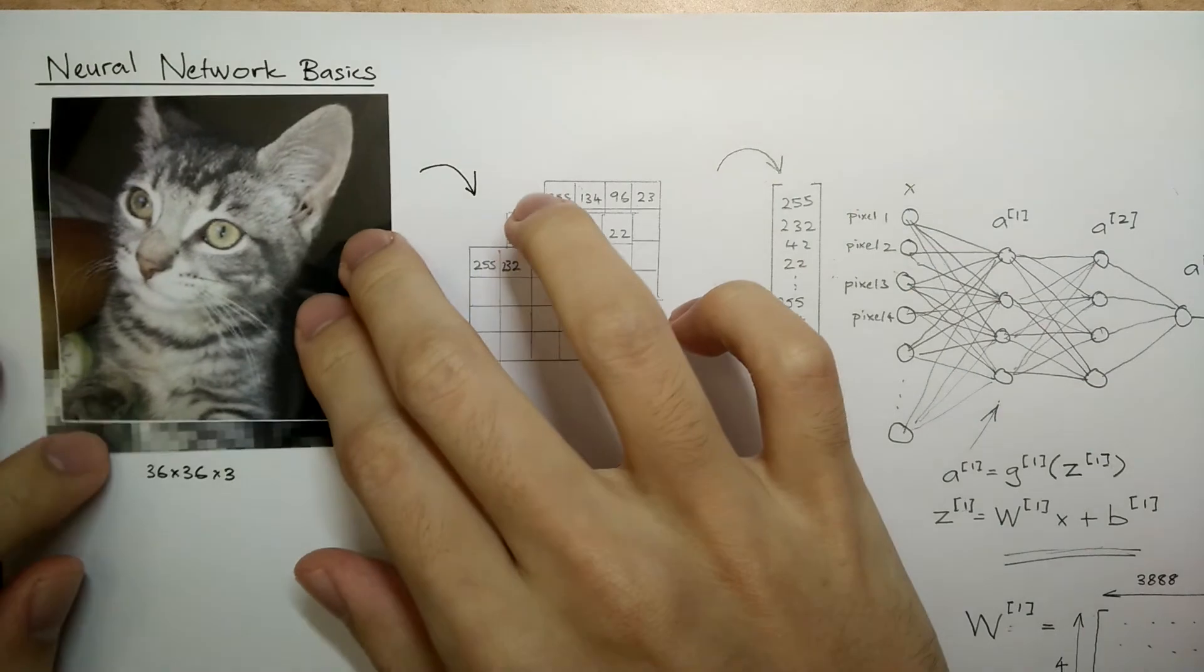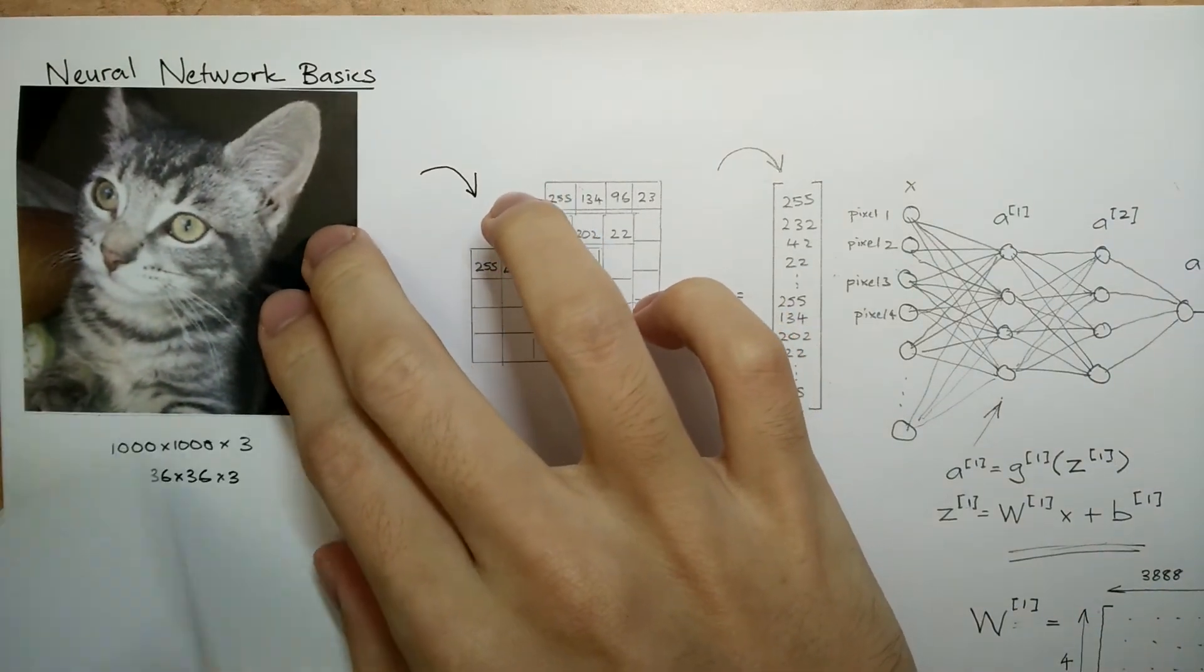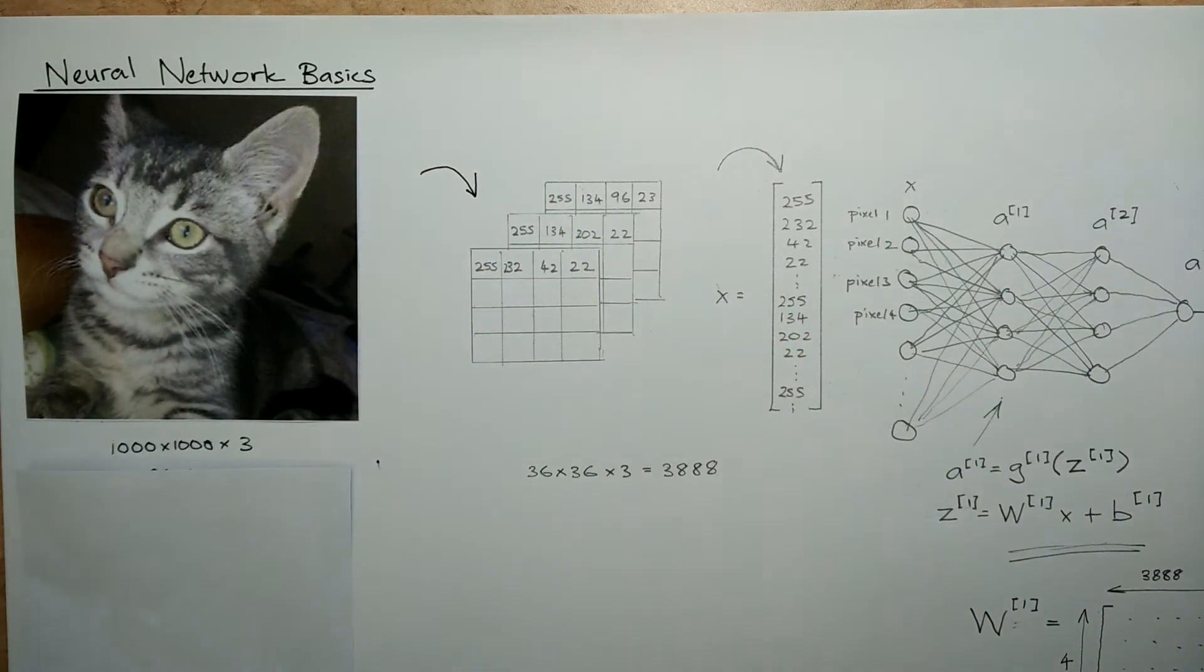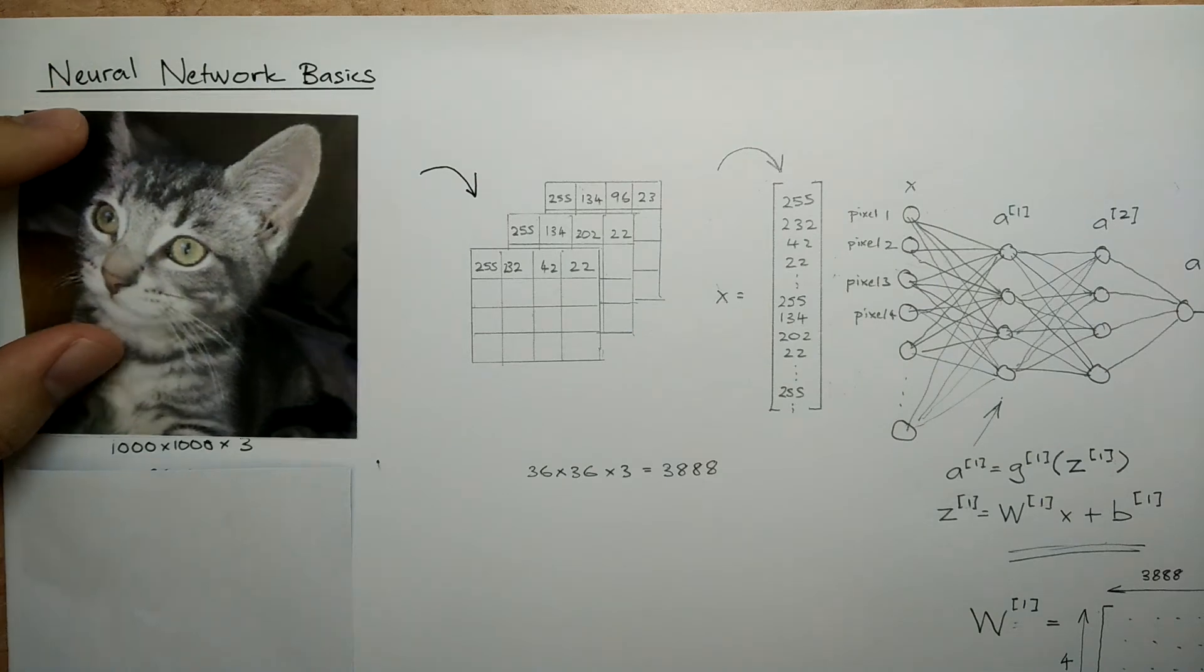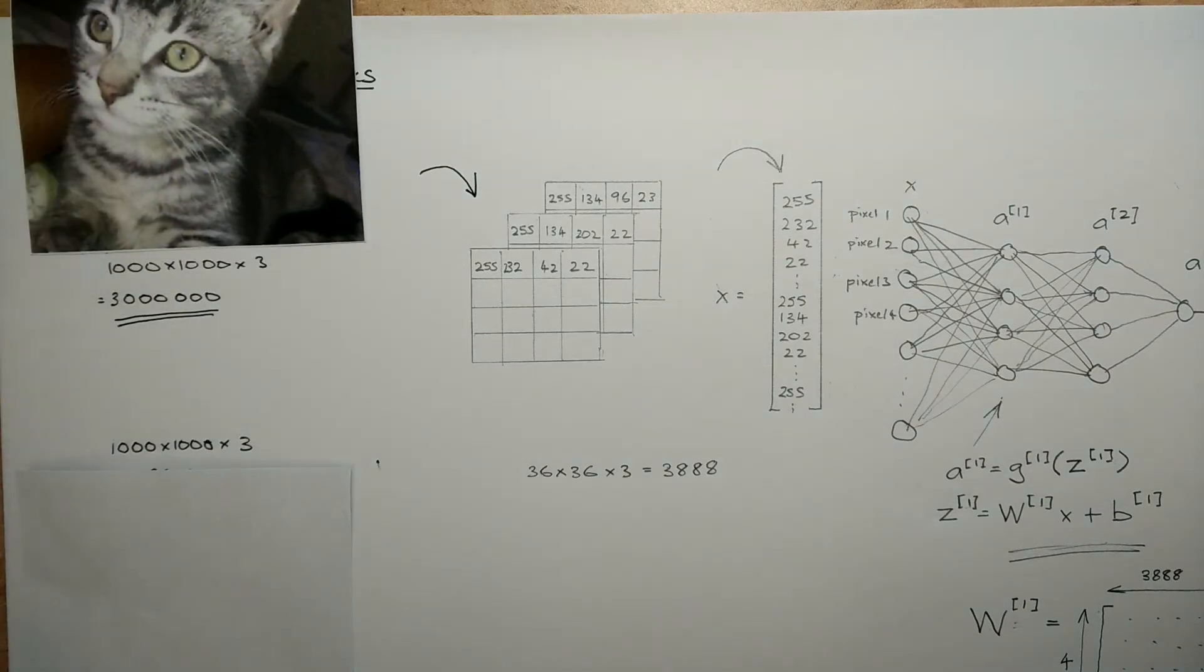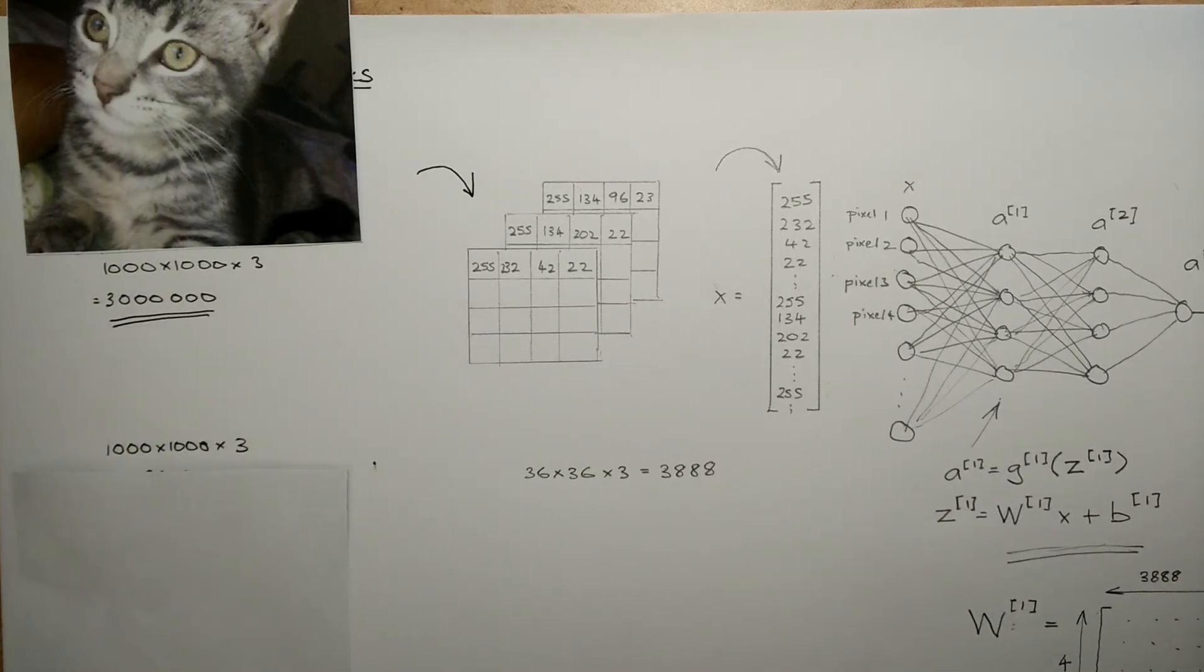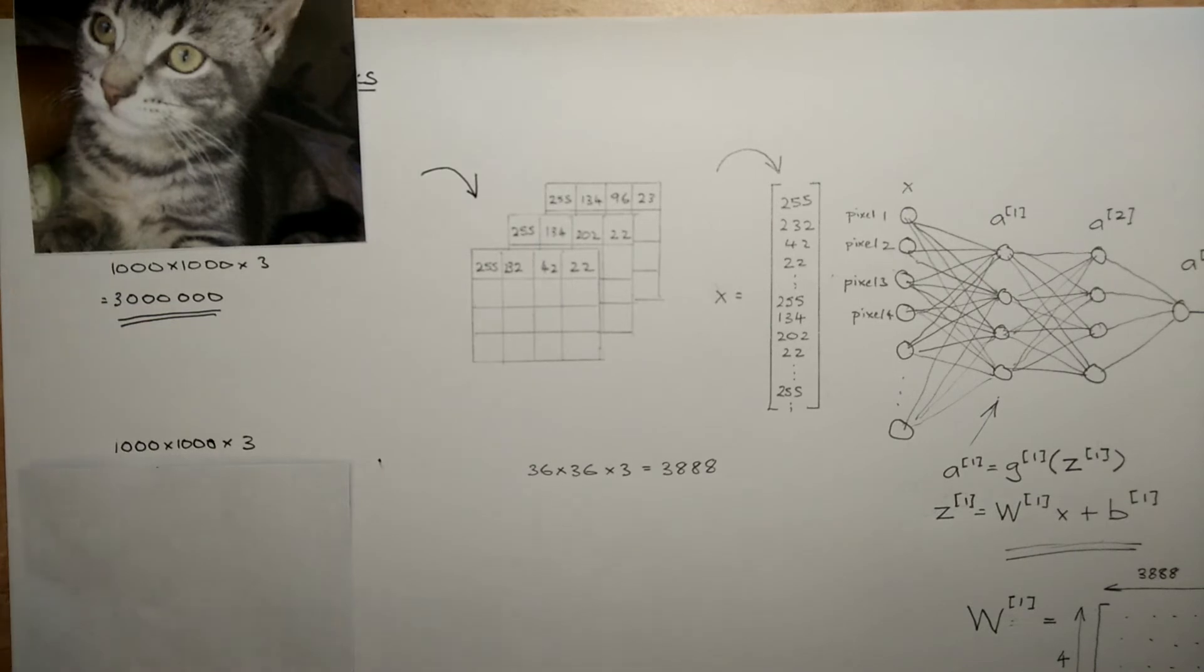But as we can see, this quickly becomes a problem because with a 1000x1000x3 image, it will have 3 million pixels, and every one of these pixels will have to be connected to the next layer of the neural network. Three million pixels connected to four neurons, that's 12 million connections. You can see how this quickly becomes unmanageable.